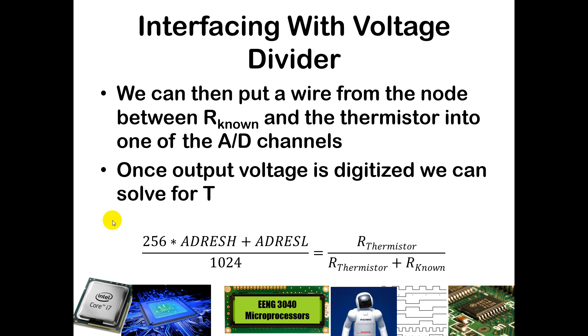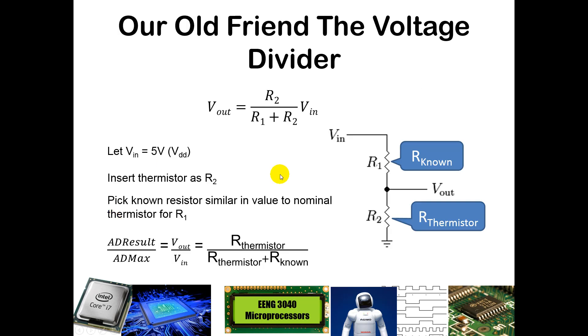That is what you will do in the in-class exercise for this week. We're going to put a wire coming out from the node between our known and the thermistor and put that into one of the A to D channels. So where you see Vout right here, this will go to one of our GPIO pins that will be configured as an analog input.